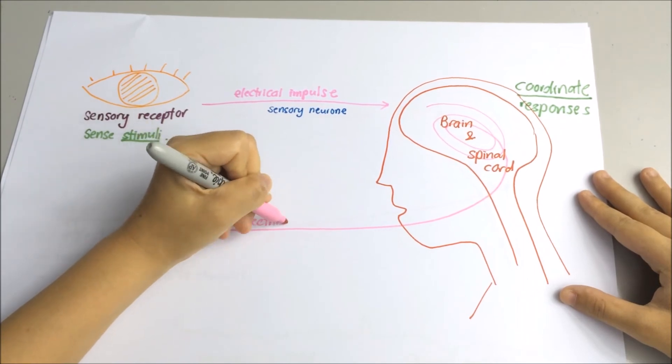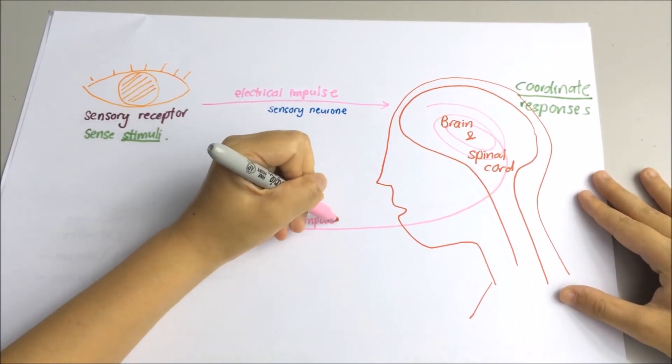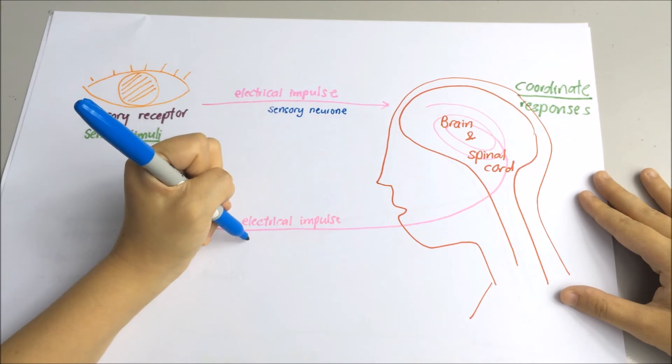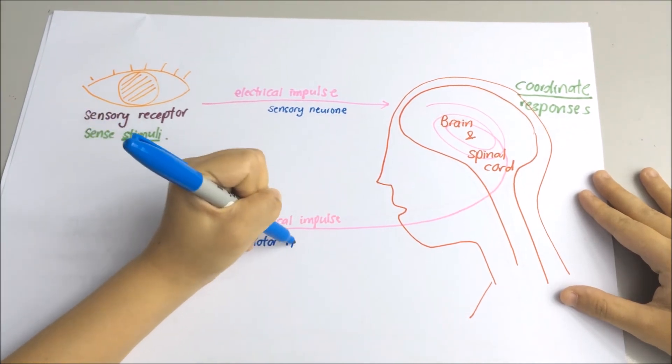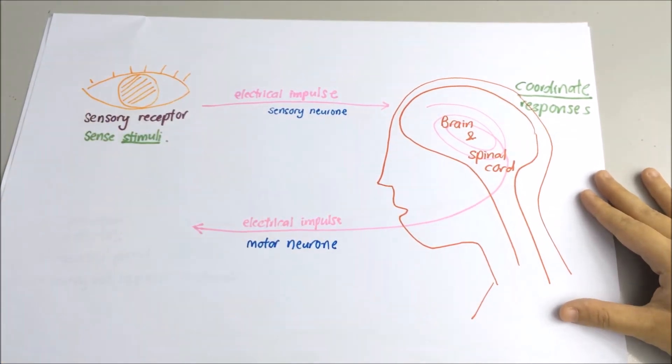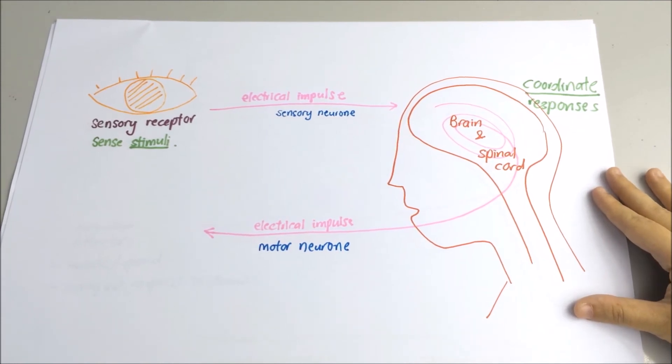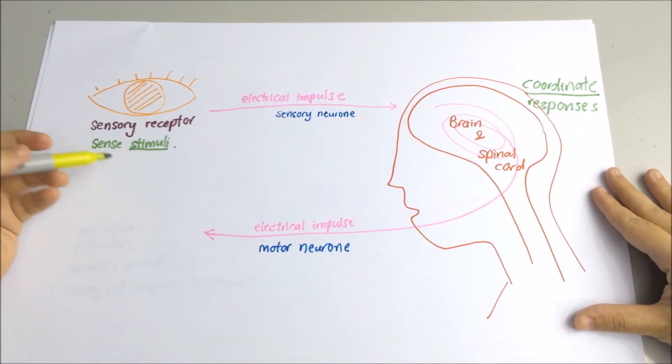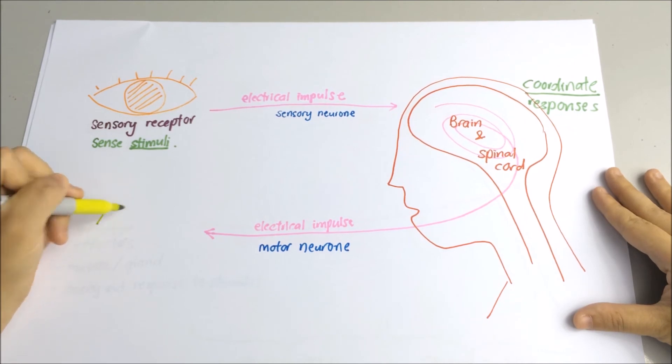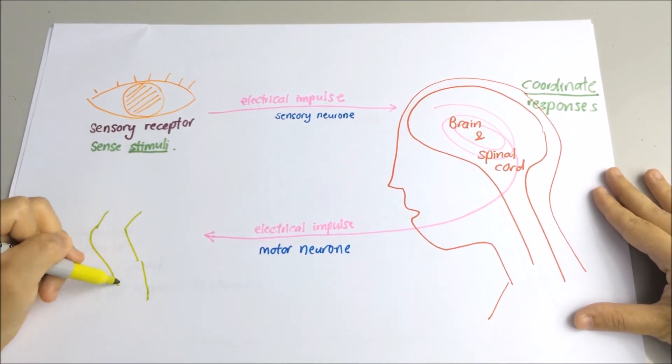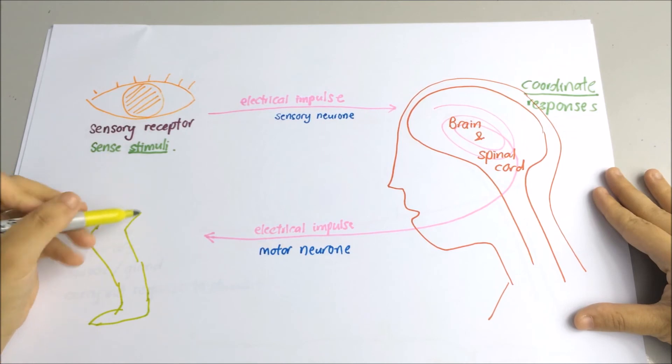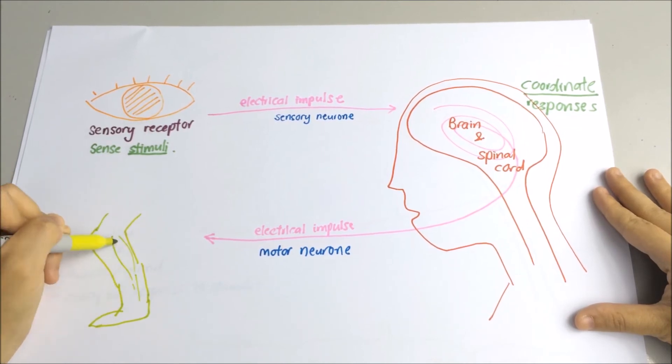Then, the information about the response passes as electrical impulses along the motor nerve to the effectors, which are often muscles or glands. The effector then produces the response to the stimulus.